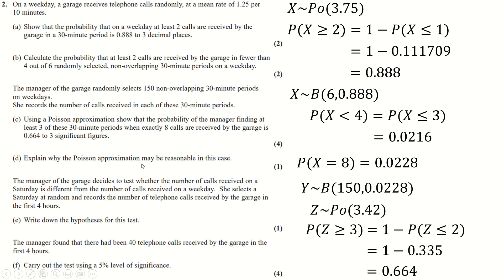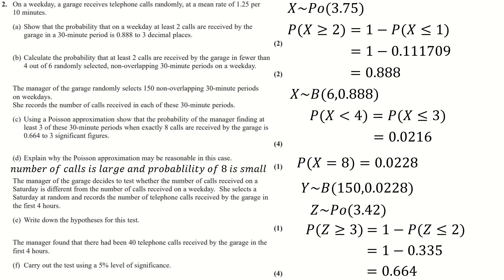The Poisson approximation may be reasonable because n is very large (150 periods) and the probability of exactly eight calls in a period is very small. Always use context when explaining this — don't just say 'n large, p small'; say something like 'the number of periods is large and the probability of receiving exactly eight calls is very small.'